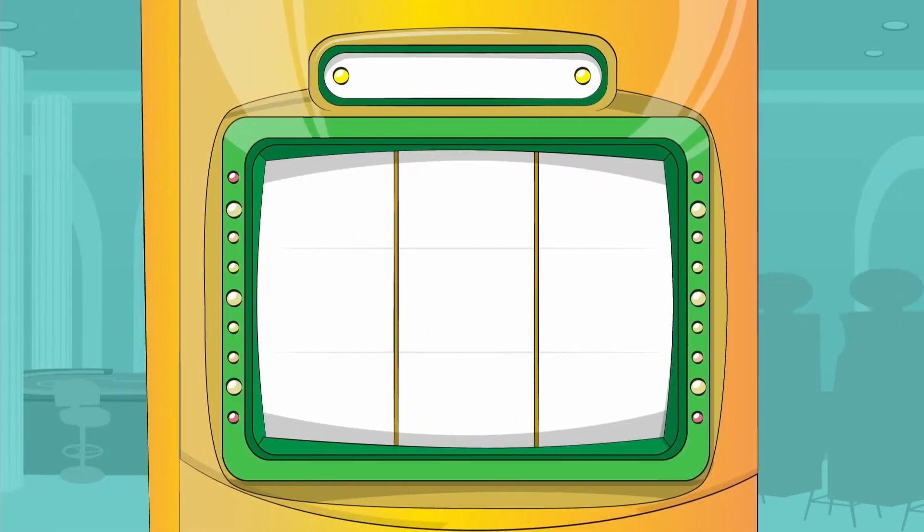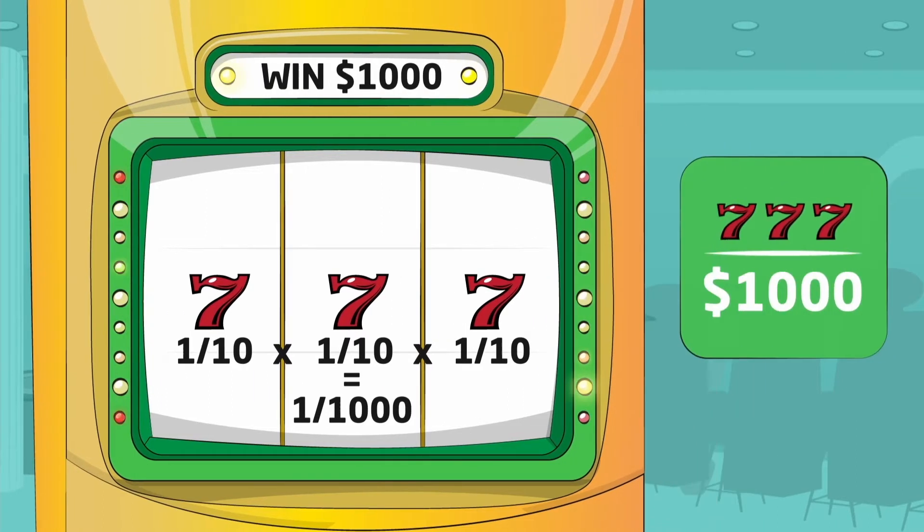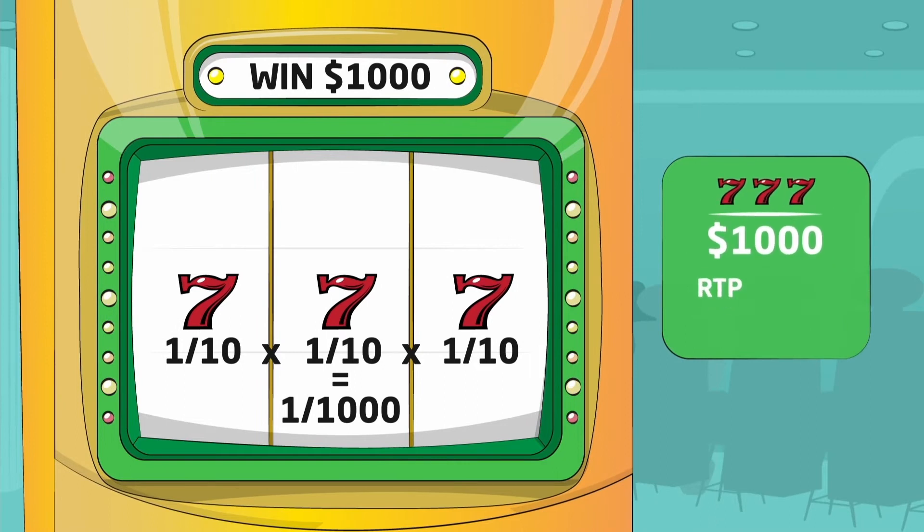The probability of each reel stopping on a seven is one in ten, so the likelihood of all reels stopping on sevens is only one in 1,000. Players therefore have a one in 1,000 chance to win $1,000, which means that the RTP of this slot is 100% and the house edge is zero.